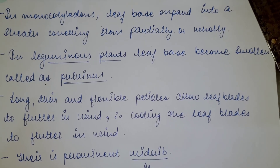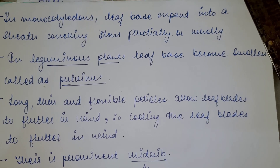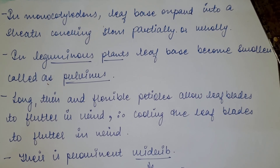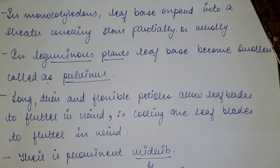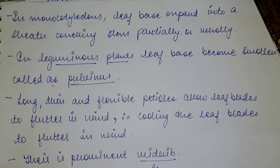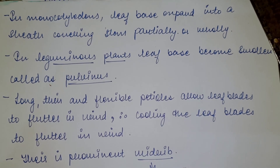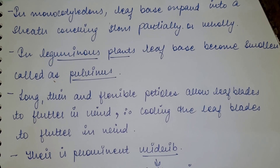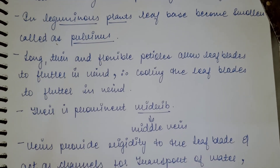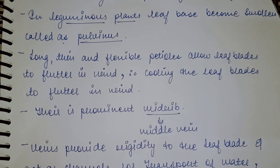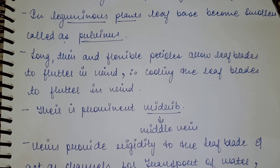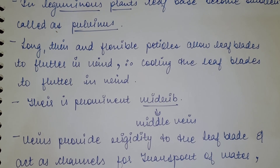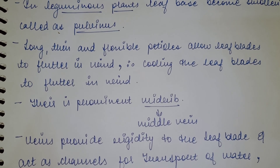In monocotyledons, the leaf base expands into a sheath covering the stem partially or wholly. In leguminous plants, the leaf base becomes swollen and is called the pulvinus.